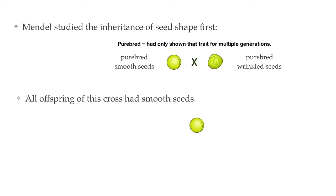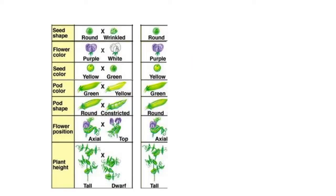He tried this type of experiment with many other traits and kept getting the same thing. Whenever he crossed purebreds for each trait, the offspring would show only one trait. Round crossed with wrinkled — all the babies were round. Purple flowers crossed with white flowers — all the babies had purple flowers. Yellow crossed with green — all the babies were yellow, and so on. This was an interesting discovery.